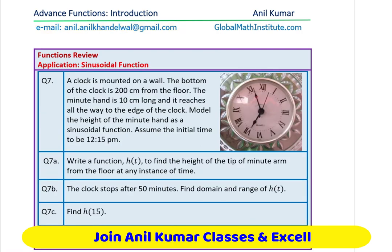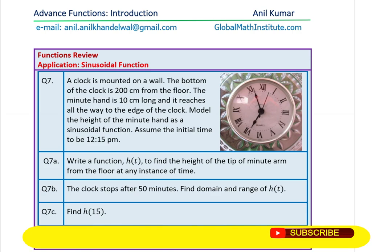Question number seven is another application function. Here we are dealing with trigonometric functions. A clock is mounted on a wall. The bottom of the clock is 200 centimeters from the floor. The minute hand is 10 centimeters long and it reaches all the way to the edge of the clock. Model the height of the minute hand as a sinusoidal function. Assume the initial time to be 12:15 pm. Question 7a, write the function h to find the height of the tip of the minute arm from the floor at any instance of time.